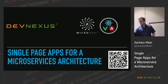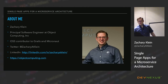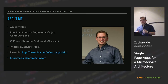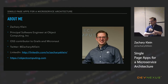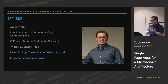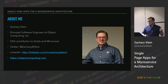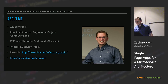My name is Zachary Klein and I work as a principal software engineer at Object Computing Incorporated. I was at the last Dev Nexus in 2020 and I'm glad to be back again this year for this grand return. I'm an open source contributor to a couple of frameworks that our company sponsors. You can find me on Twitter, LinkedIn, and our website at the bottom. So let's jump right into it.